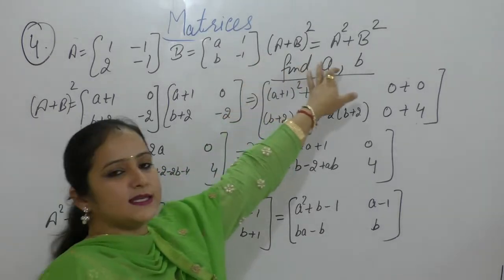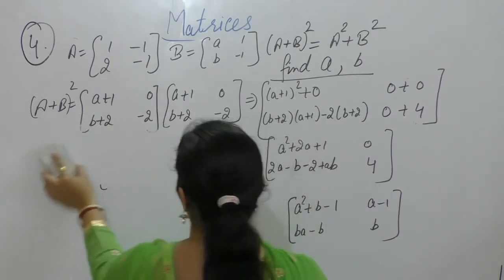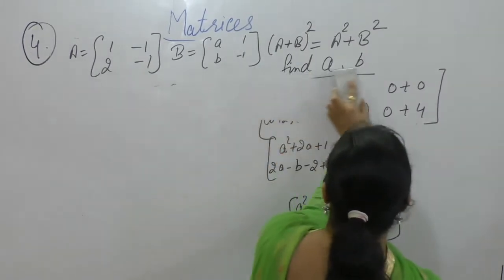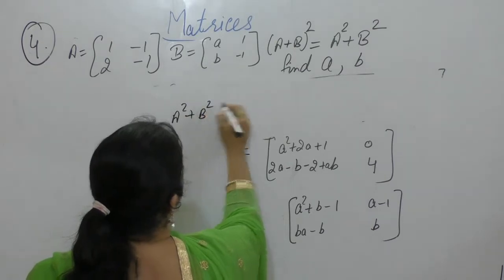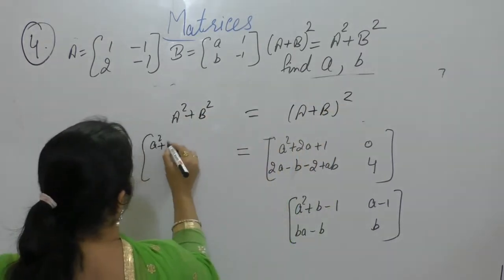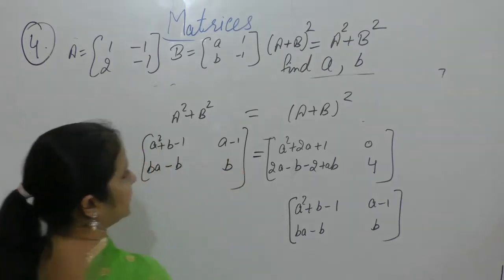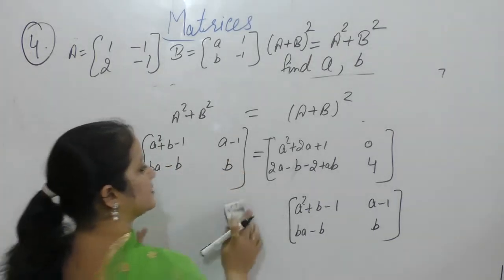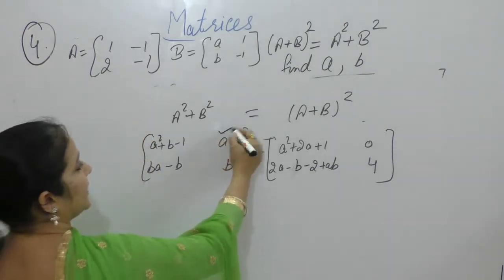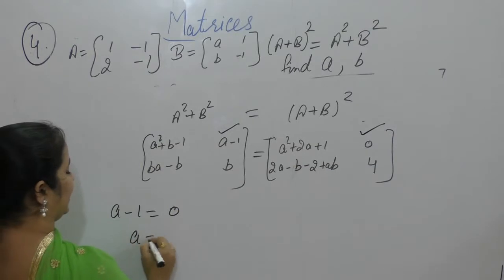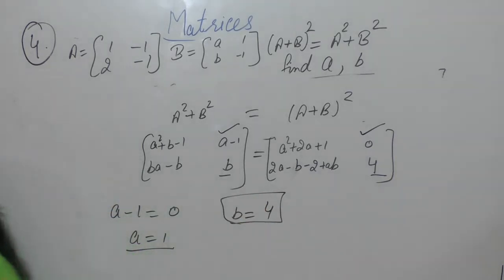Given that (A + B)² = A² + B². Expanding: A² + B, minus 1·A, minus 1·BA, minus B·B. Now solve this. Two matrices are equal if their corresponding elements are equal. So A minus 1 is equal to 0, from which we get A as 1. B is equal to 4. So A is 1 and B is 4.